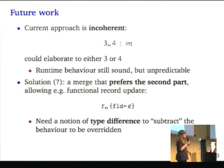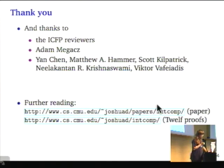As I said, the current approach is incoherent. The merge can turn into whatever the type checker feels like. This is still sound, they're both integers, but it's very unfriendly. The solution I'm working on is a merge that prefers the second part, which would also allow you to encode functional record update, because the second part of the merge would override the field in R if it's defined. To make this work, I think you need a notion of type difference, so you know which part of the behavior of R to leave and which part to overwrite with the second part. Thank you, and you can find the paper and also the Coq development, everything was proved in Coq. Thank you.